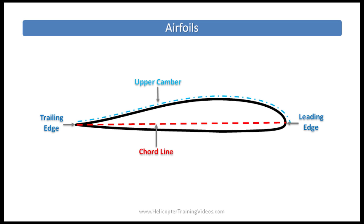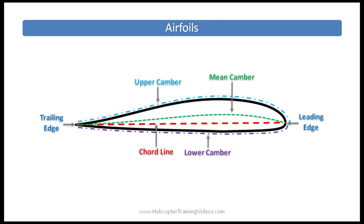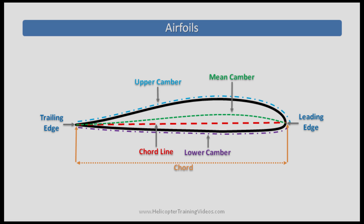Upper camber describes the shape of the upper surface of the airfoil. Lower camber is the same but for the lower surface. We take the distance between the upper and lower camber, and the equal midpoint between those two gives us what's called the mean camber. Cord is essentially the length of the cord line — the length of the airfoil from the leading edge to the trailing edge.